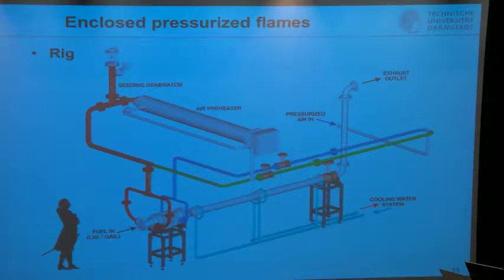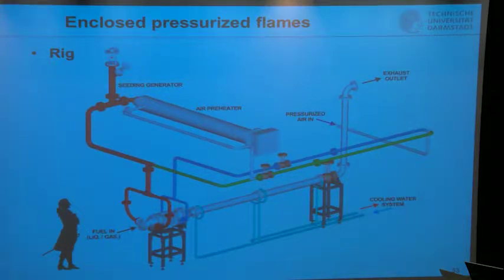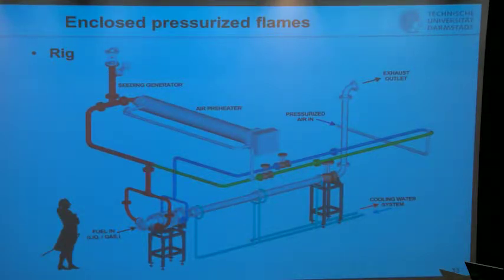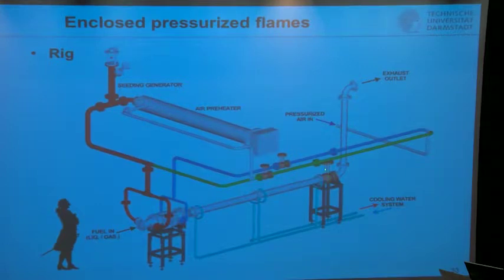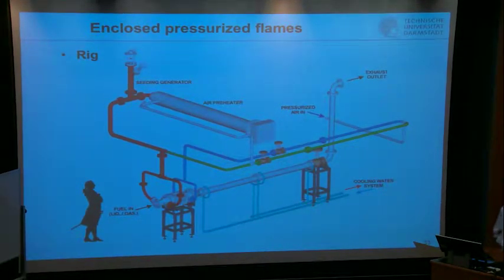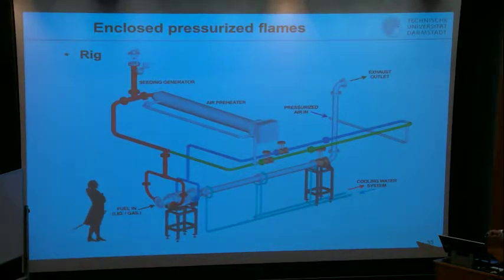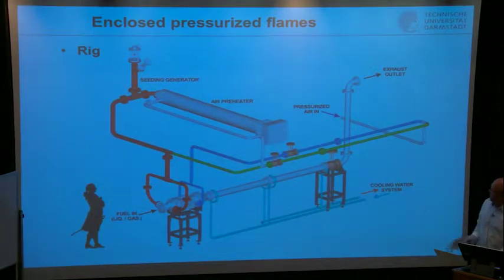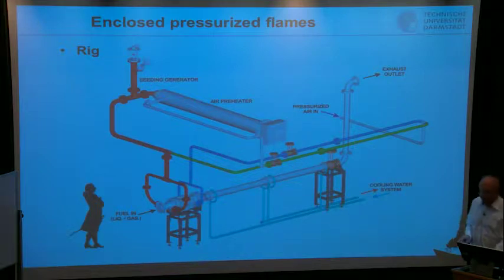Here you see a structure built up over the years. The region of interest is our flame tube - a single nozzle with optical access from three sides, operated with either liquid or gaseous fuels. Air comes from a compressor system with a preheater of around 40-50 kilowatts, heating up to 150 grams per second to a temperature of up to 700 K. Cooling air manages the high-pressure valve. The exhaust system sprays in water to cool exhaust gases below 650-700 K, which is the operation limit of the nozzle.